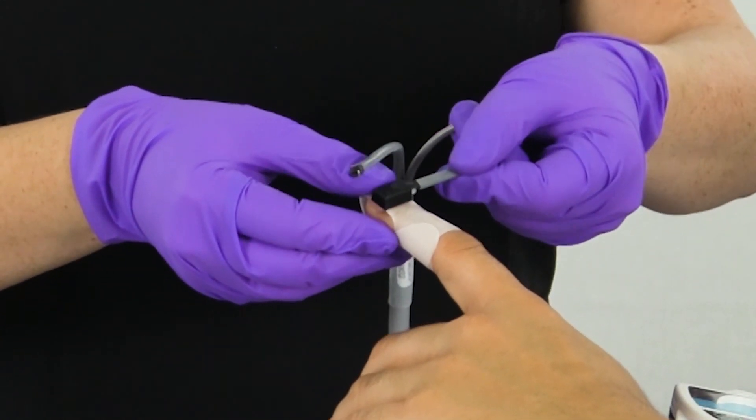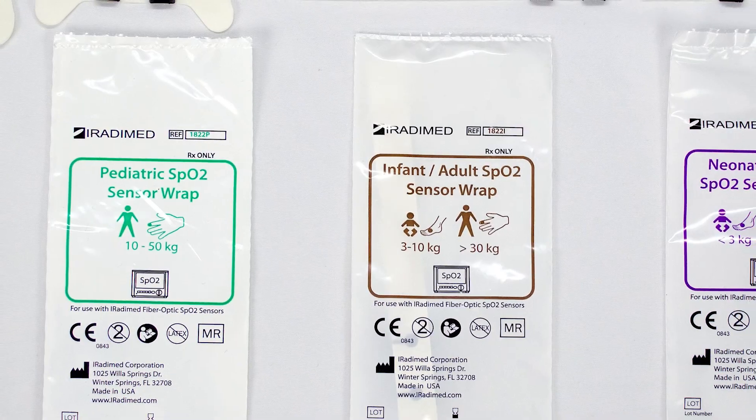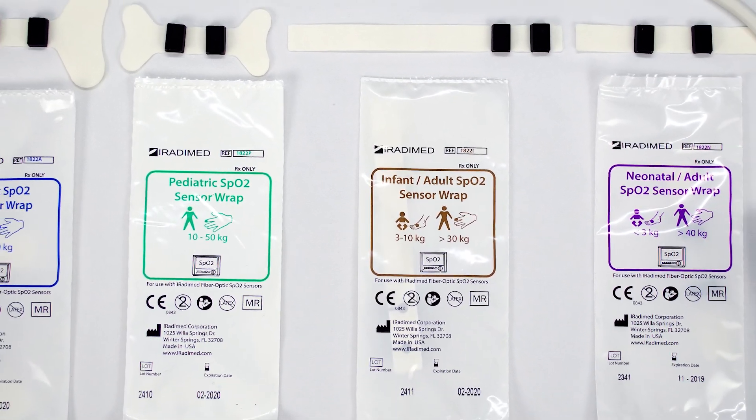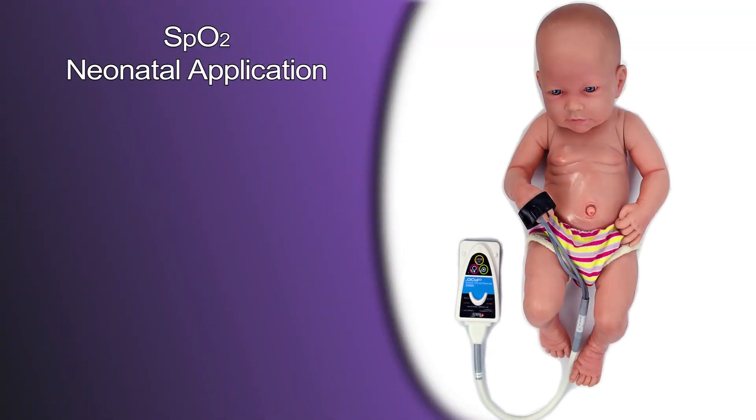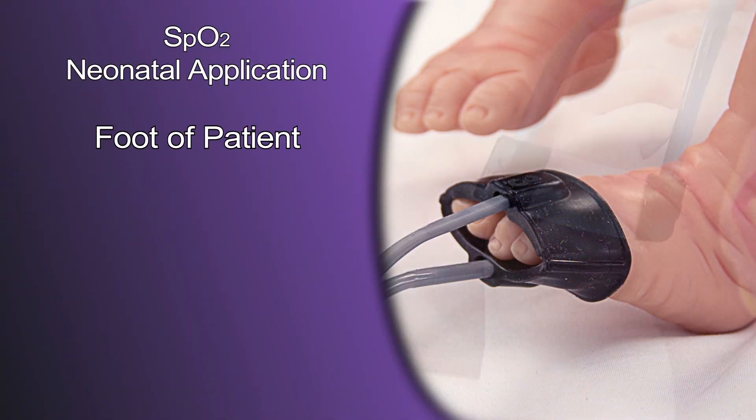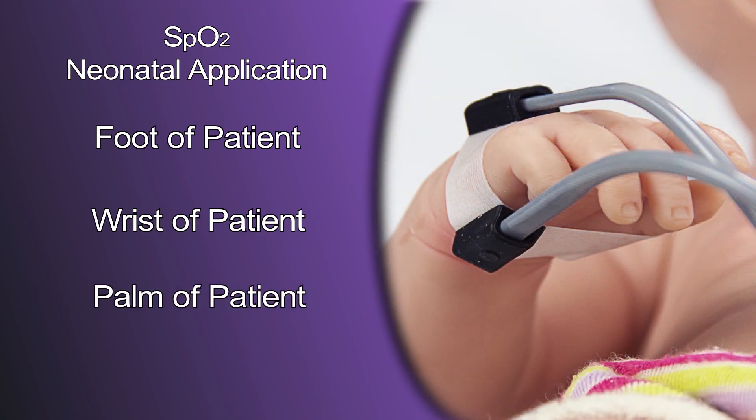Pull straight out and dispose of used grips accordingly. Iratomed's SpO2 grips can be placed on any finger or toe the user finds most appropriate. For neonatal patients, the user may also choose the foot, wrist, or palm of the patient.